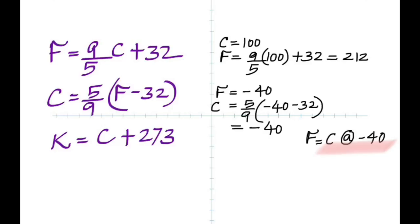What is so special about the Kelvin scale? The lowest temperature on the Kelvin scale is zero, and that's called absolute zero, because the Kelvin scale is also called the absolute scale.